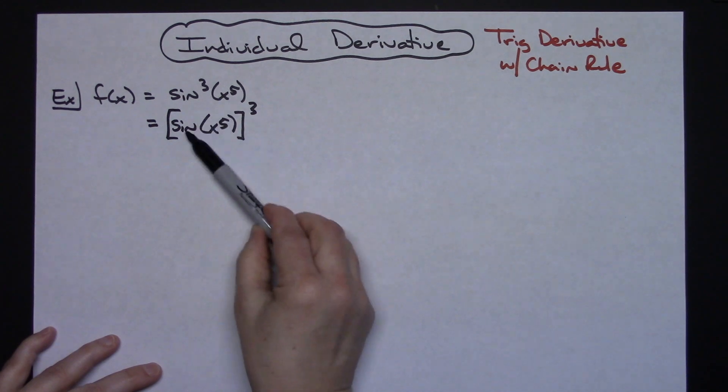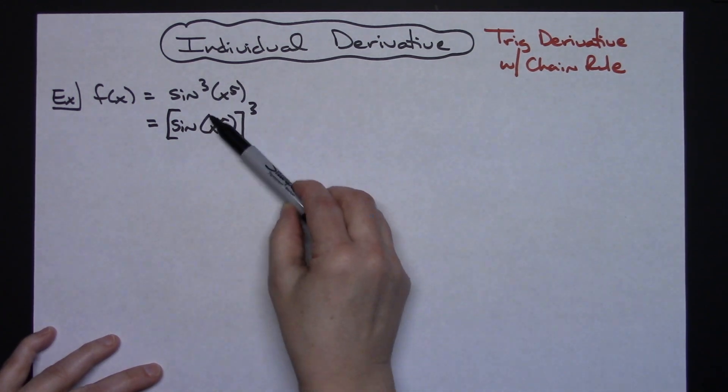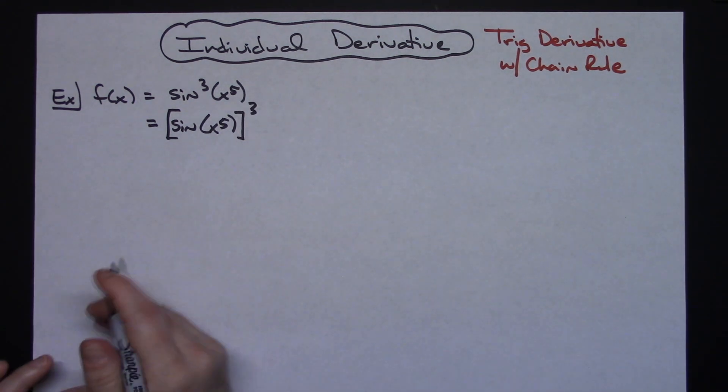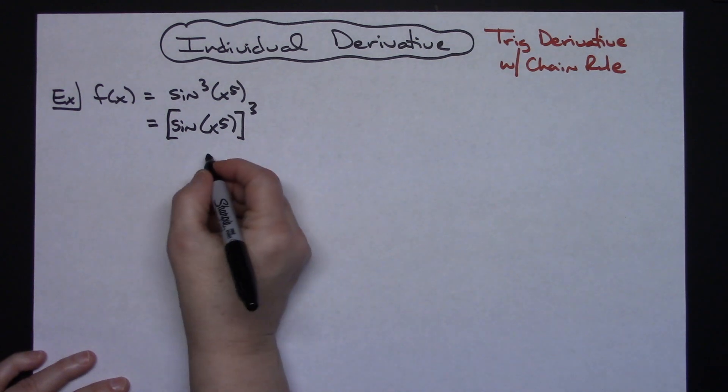Clearly I can see my inside function is the sine x to the fifth and my outside function is something being raised to that third power. That's going to be my first indication I am going to end up doing some chain rules here.